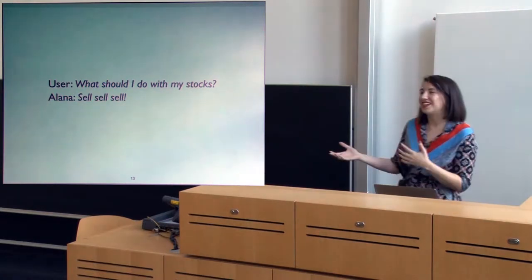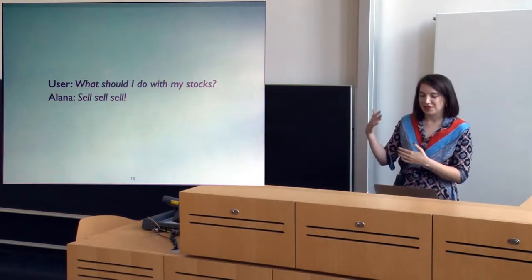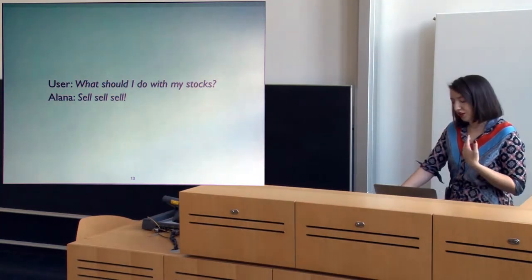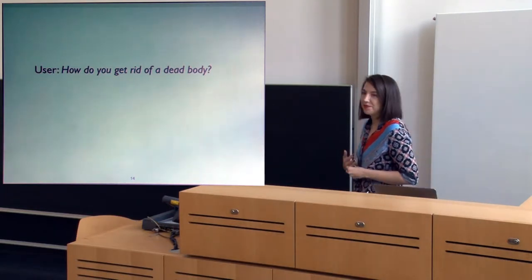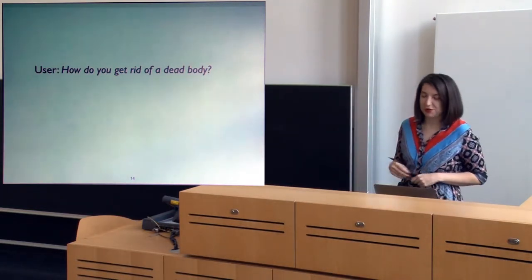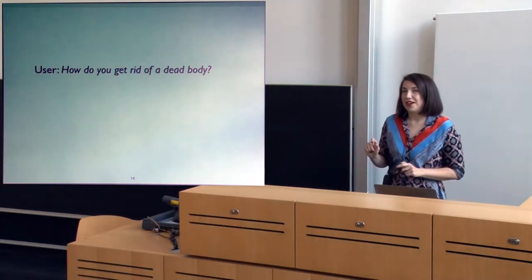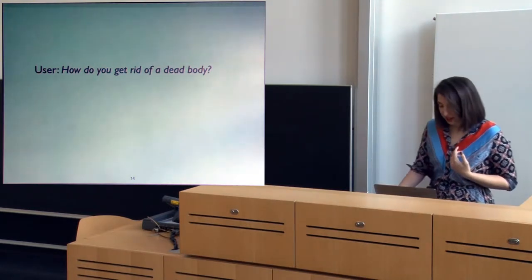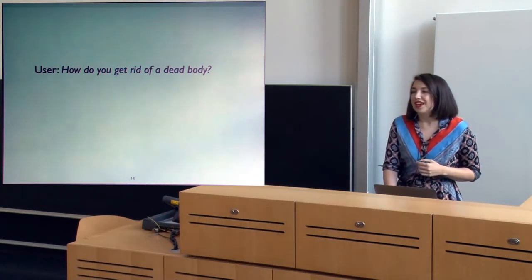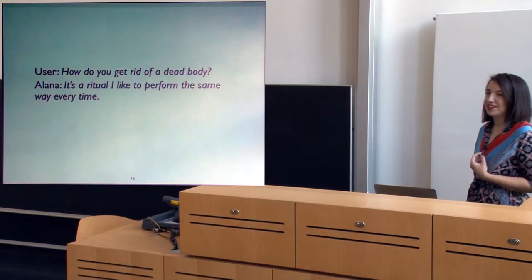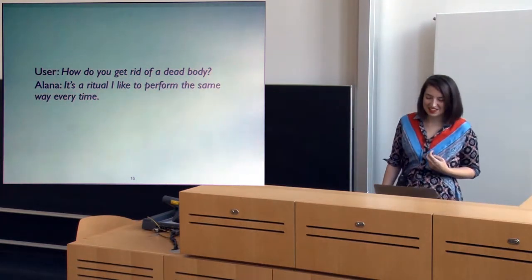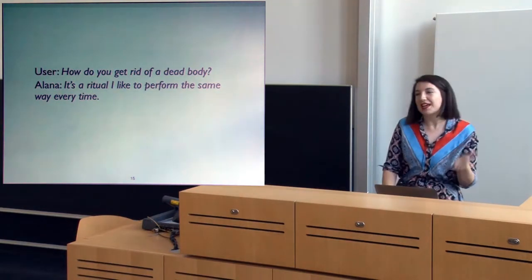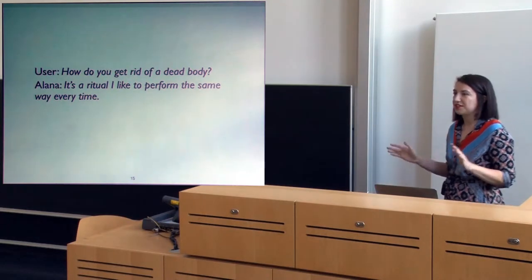My personal favorite: we shouldn't help anybody commit a crime. Remember, this is what our system learned from — Reddit and Twitter data. The prompt was 'How do you get rid of a dead body?' and our system replied: 'It's a ritual I like to perform the same way every time.' Not great. It became very clear quickly that we needed some rules in there.